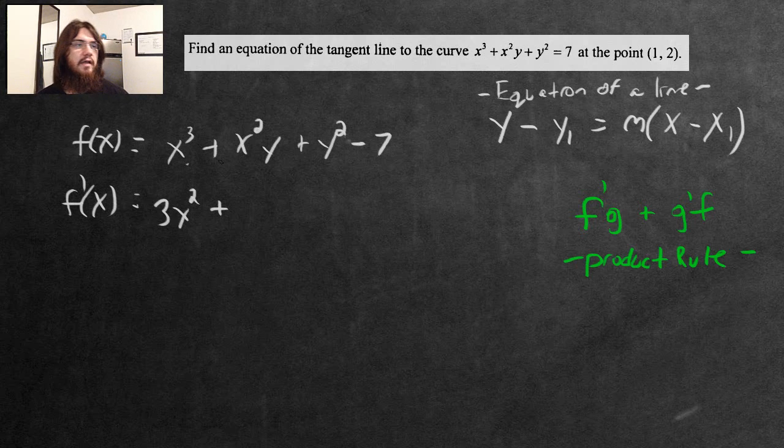In this particular instance, x² is going to be our f. The derivative of x² gives us 2x. Now we leave the g alone, which is the y in this term, so we put a y here. According to the product rule, we add the derivative of g, which is 1, but we have to add a dy/dx here because we're doing everything in terms of x. Then we multiply it by f, which is x².